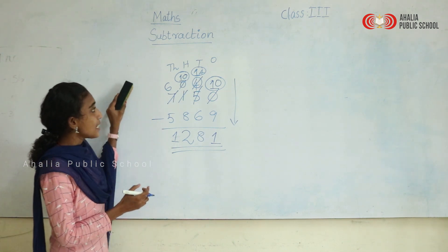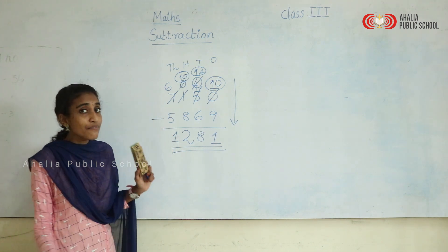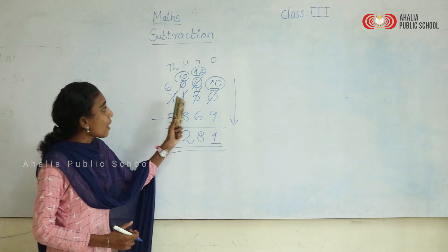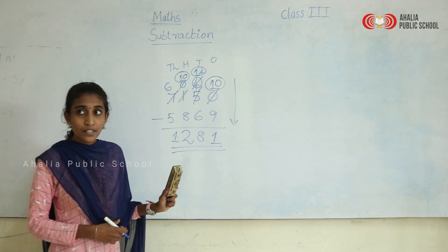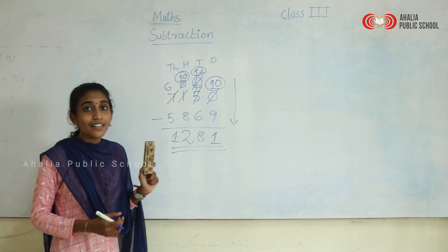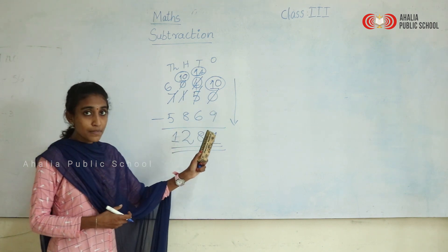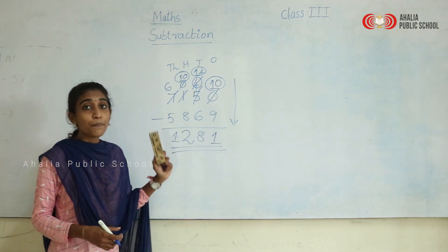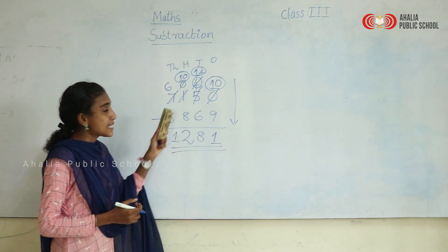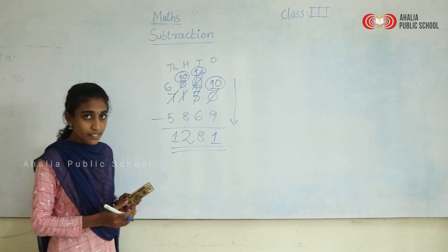So we had two four-digit numbers and subtracted 5,869 from 7,150 using subtraction with regrouping. When we find it difficult to subtract numbers, we take a 1 from the next place value. Hope you understand this concept.